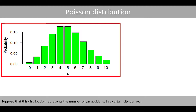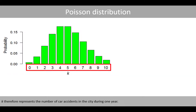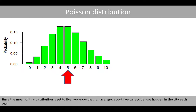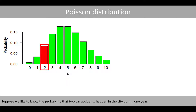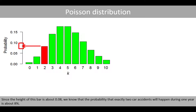Suppose that this distribution represents the number of car accidents in a certain city per year. K therefore represents the number of car accidents in a city during one year. Since the mean of this distribution is set to 5, we know that on average about 5 car accidents happen in a city each year. Suppose we like to know the probability that 2 car accidents happen in a city during one year. Since the height of this bar is approximately 0.08, we know that the probability that exactly two car accidents will happen during one year is about 8%.